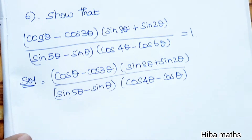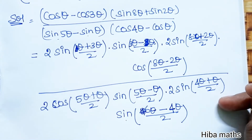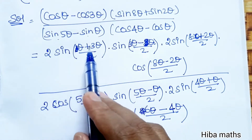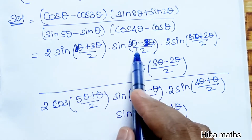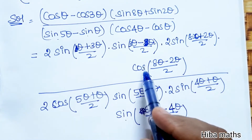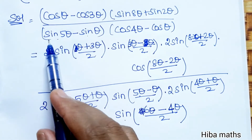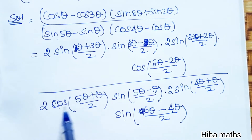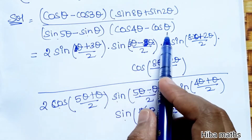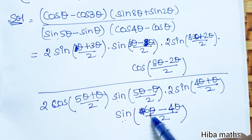Now we apply the identities. cos C minus cos D equals 2 sin((C+D)/2) sin((D-C)/2). sin C plus sin D equals 2 sin((C+D)/2) cos((C-D)/2). For the denominator, sin C minus sin D equals 2 cos((C+D)/2) sin((C-D)/2). And cos C minus cos D equals 2 sin((C+D)/2) sin((D-C)/2).